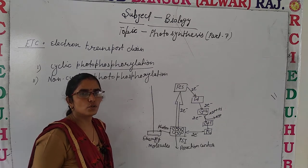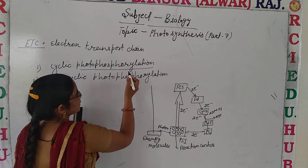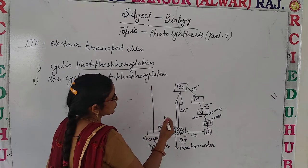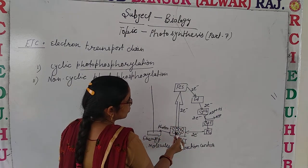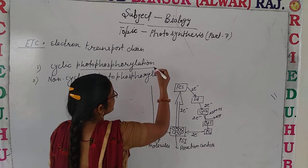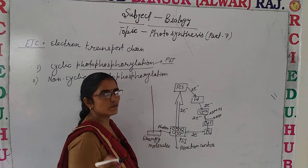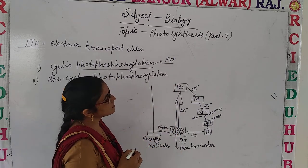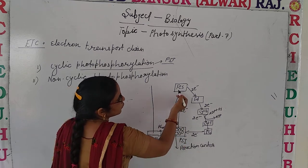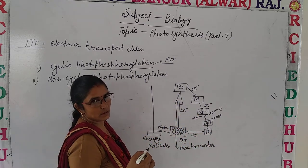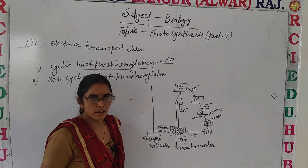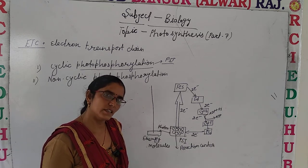Let's discuss cyclic photophosphorylation first. In cyclic photophosphorylation, electrons move through a pathway via various electron acceptors. One key point: in cyclic photophosphorylation, only PS1 — photosystem 1 — takes part. It is called cyclic because the electrons released through PS1, after passing through various electron acceptors, return back to PS1 — they complete a cycle.